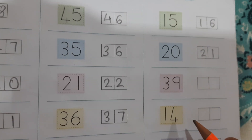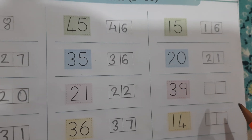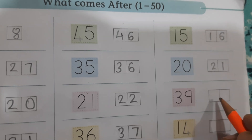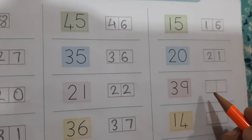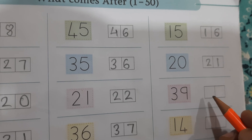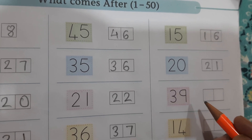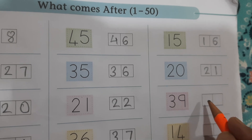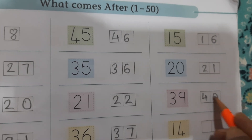After 39? 3, 9, 39. 3, 9, 39. 3, 0, 30. 3, 9, 39. After 39? After 39? [Student says 38.] 38 is the before number. Okay. After 39? 40. 4, 0, 40. 4, 0, 40.